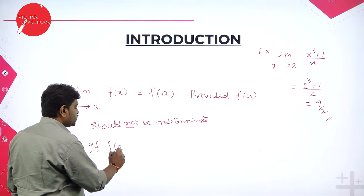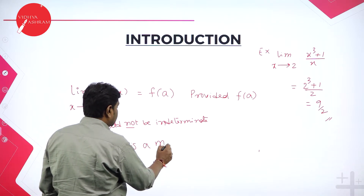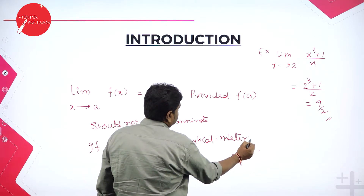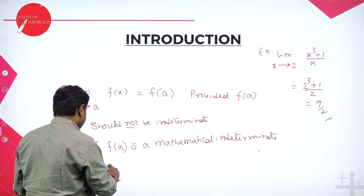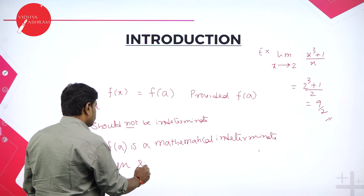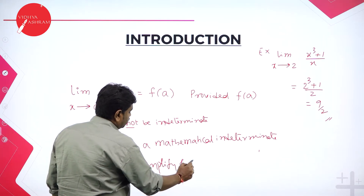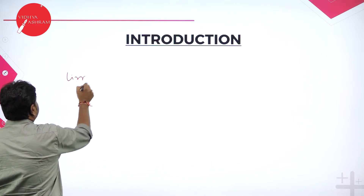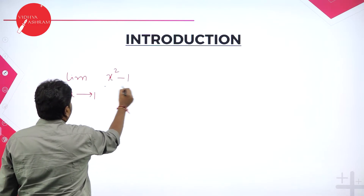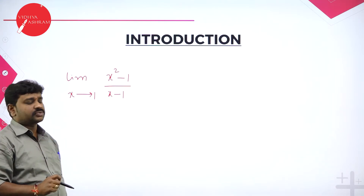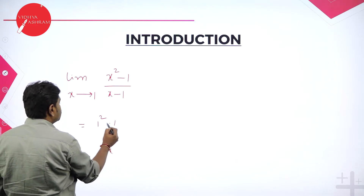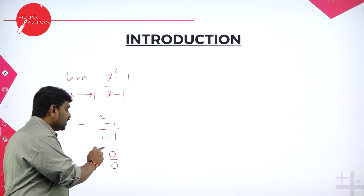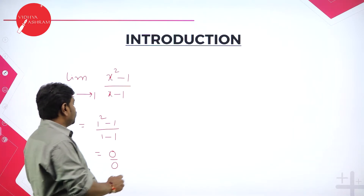If f of a is indeterminate, if f of a is mathematically indeterminate, then simplify and apply limit. For example, we will take limit x tends to 1, x square minus 1 by x minus 1. In the place of x, put 1. You will get 1 square minus 1 by 1 minus 1, that will become 0 by 0. Dear students, 0 by 0 is not defined — 0 by 0 is an indeterminate form. Nobody knows the value of 0 by 0, so we should not get this form.